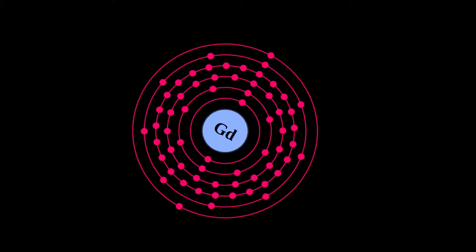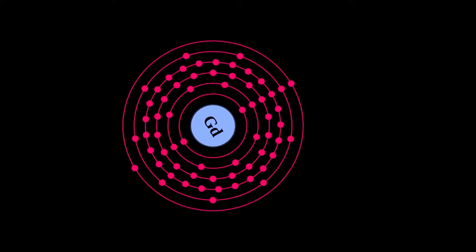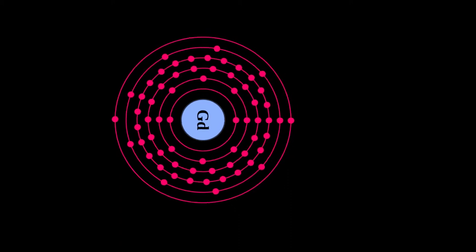Gadolinium is a chemical element with symbol Gd and atomic number 64.